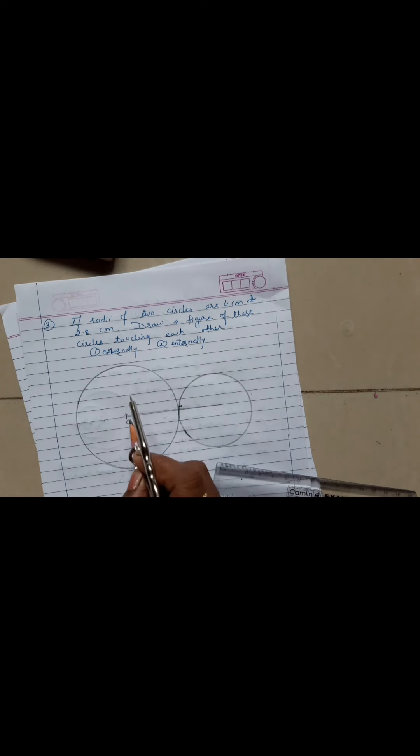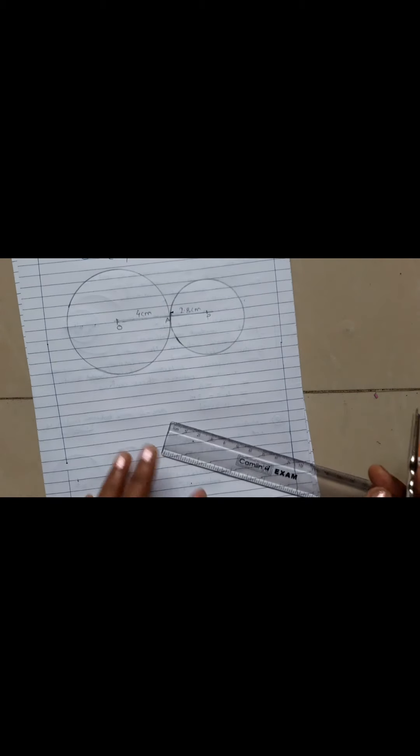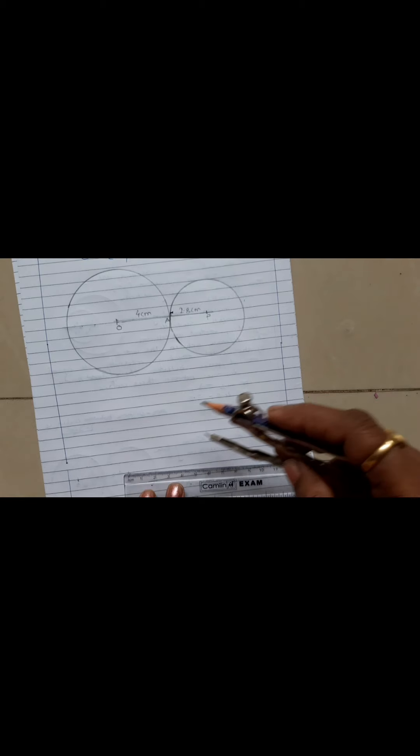So label this: this is circle with center O, its radius is 4 centimeters. Circle with center P, its radius is 2.8 centimeters. And here the point of contact - they are externally touching. Now we are going to draw internally touching.